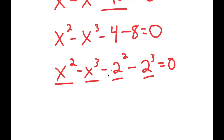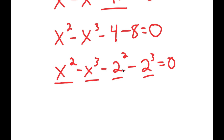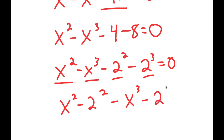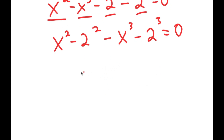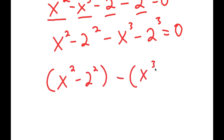Now I'm going to group x squared and 2 squared. So I have x squared minus 2 squared, and then I can group x to the power of 3 minus 2 to the power of 3. So I have negative x to the power of 3 minus 2 to the power of 3 is equal to 0. I'll put these in parentheses: x squared minus 2 squared, minus x to the power of 3 plus 2 to the power of 3, because the negative sign distributes.